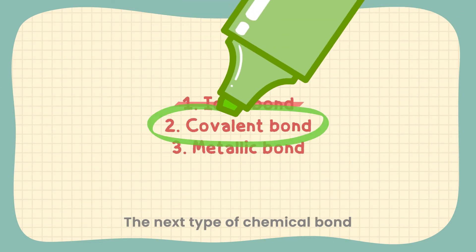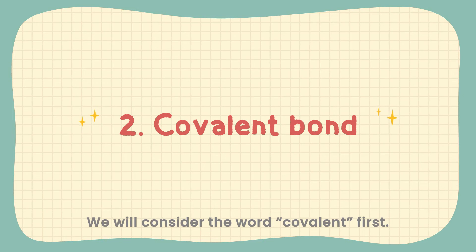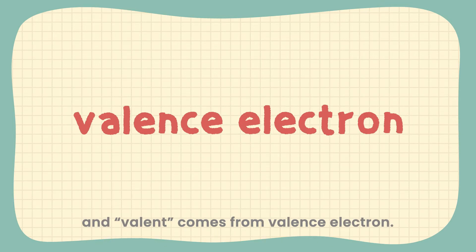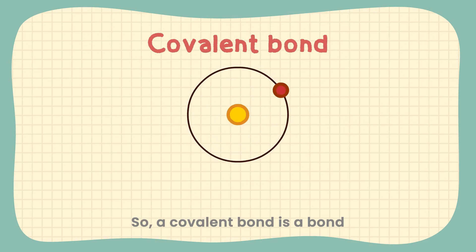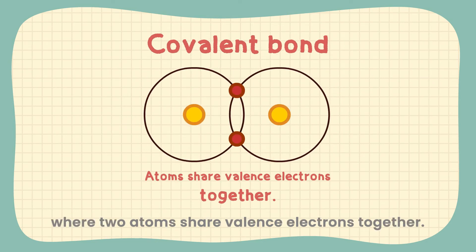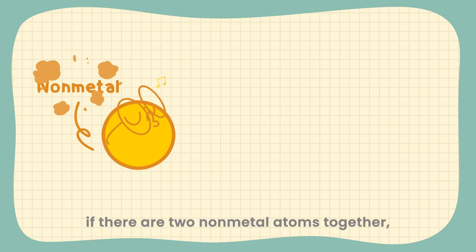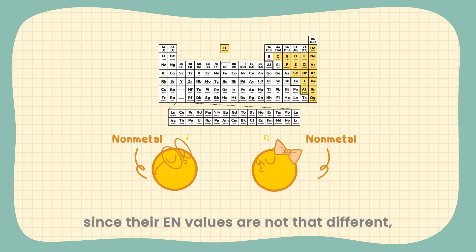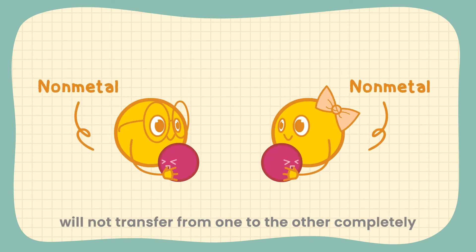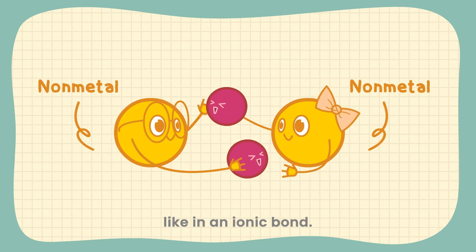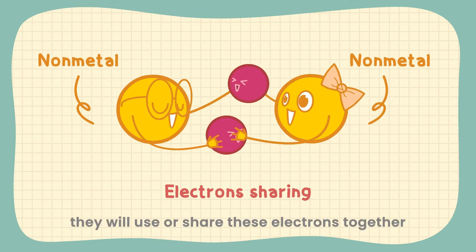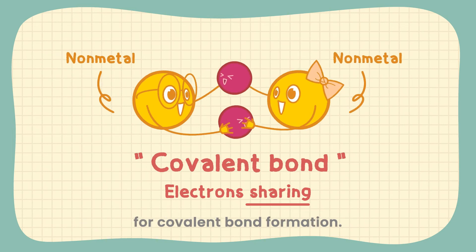The next type of chemical bond is the covalent bond. The word 'co' means together and 'valent' comes from valence electrons. So, a covalent bond is a bond where two atoms share valence electrons together. For example, if there are two non-metal atoms together, since their EN values are not that different, valence electrons between them will not transfer from one to the other completely as in an ionic bond. However, they will share these electrons together, which is the main mechanism for covalent bond formation.